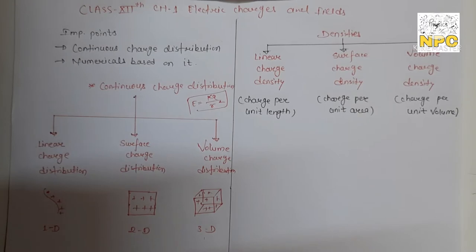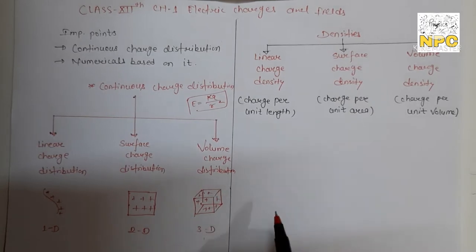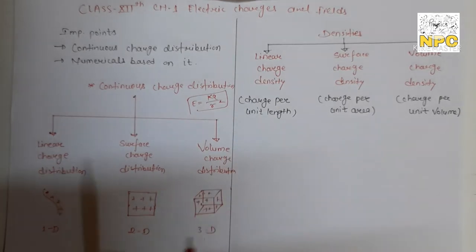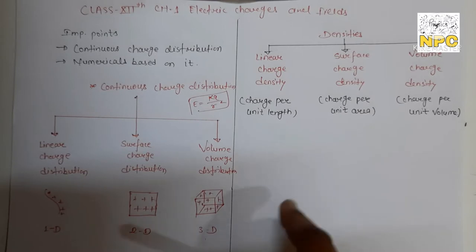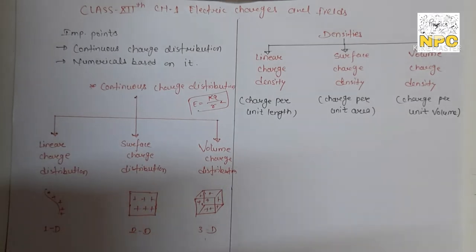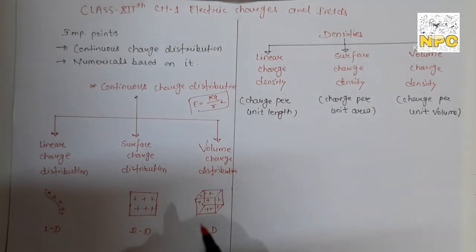Now, if this distribution is done per unit length, per unit surface, or per unit volume, a new quantity is introduced. This is known as linear charge density, surface charge density, and volume charge density. Charges distributed per unit length = linear charge density; per unit area = surface charge density; per unit volume = volume charge density.